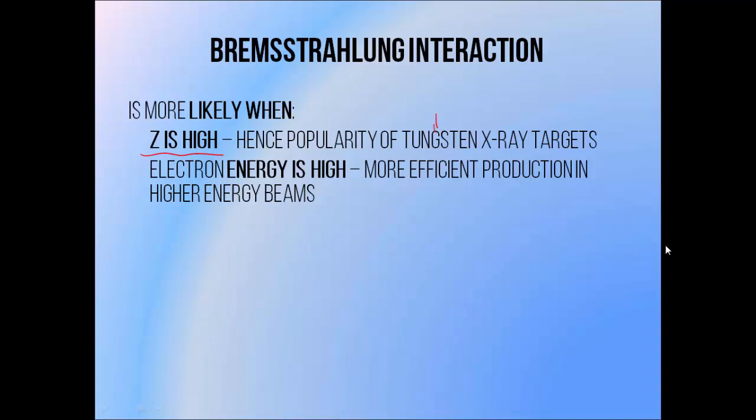You may wonder why we use tungsten instead of lead, which has an even higher atomic number. That's because while tungsten may not have as high an atomic number as lead, it is much more durable, so it is able to cope better with the stress of being exposed to a higher intensity beam of electrons. The interaction is also more likely when the electron energy is high, so the production of X-ray beams is much more efficient when higher beam energies are used. This is why when using a CT scanner, for example, if you increase the peak beam energy, your patient will receive a higher dose rate even if you use the same beam current.